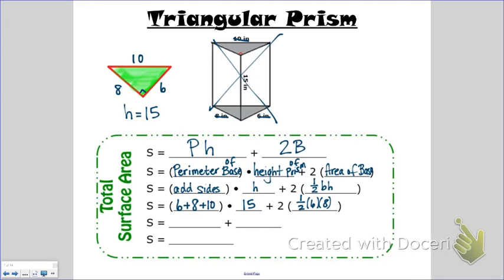6 plus 8 plus 10 is 24 times 15. Then we have 2 times—half of 6 times 8 is also 24. 24 times 15 is 360. 2 times 24 is 48. And 360 plus 48 is 408 square inches, which is the total surface area of our triangular prism.